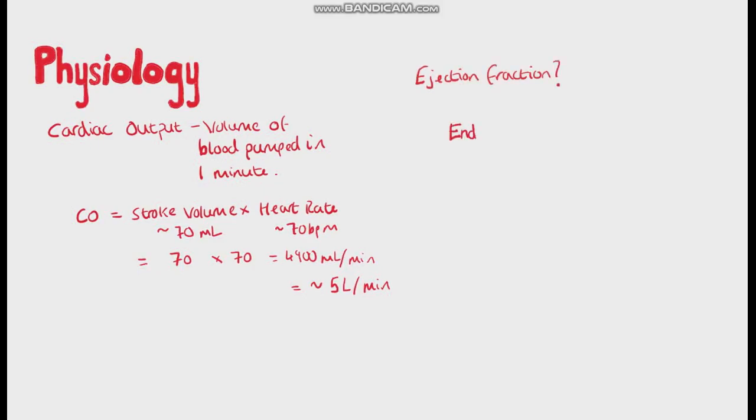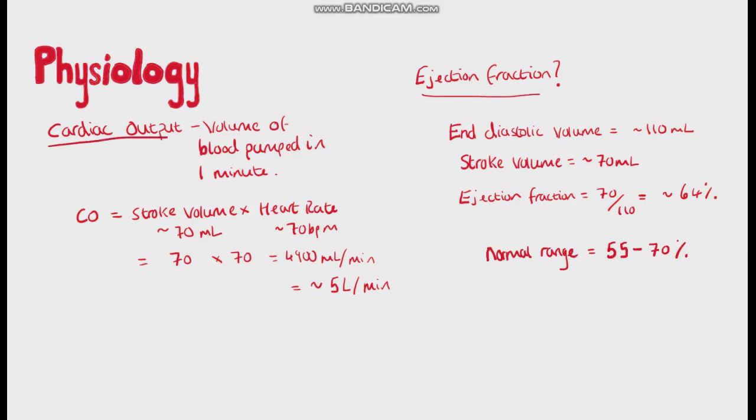So what does ejection fraction mean? Ejection fraction is essentially showing you how much blood is pumped out of the ventricle compared to the total volume of blood in the ventricle at the beginning of contraction. It's usually shown as a percentage. So as an example, if we have a stroke volume of 70 milliliters and an end diastolic volume of 110, the ejection fraction is 70 divided by 110, which is about 64%. A normal ejection fraction is between 55 and 70%.